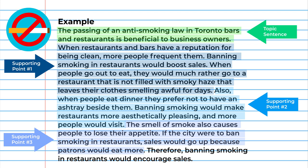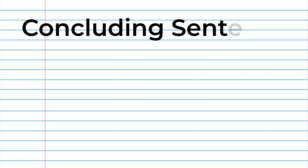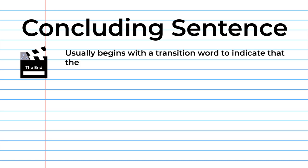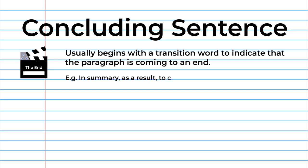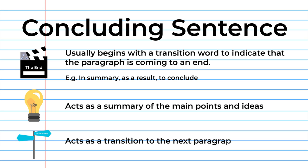Each of these points further develops the idea expressed in the topic sentence. The concluding sentence signals the end of the paragraph. It usually begins with a transition word to indicate that the paragraph is coming to an end — for example, transition words such as: in summary, as a result, and to conclude. The concluding sentence acts as a summary of the main points and ideas of the paragraph. It can also act as a transition to the next paragraph.